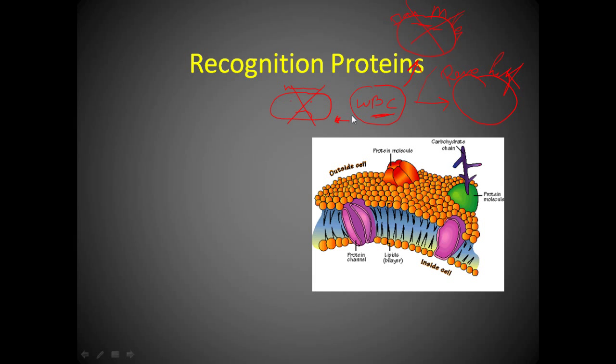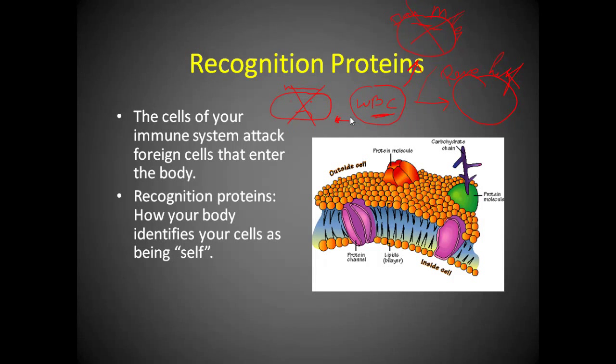Obviously, if you need a heart as an organ, you're going to do an organ transplant. So, recognition proteins allow your white blood cells to identify your cells as being self.